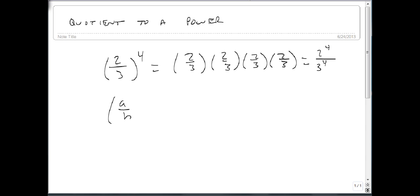So our basic rule is a over b to the m is equal to a to the m over b to the m.